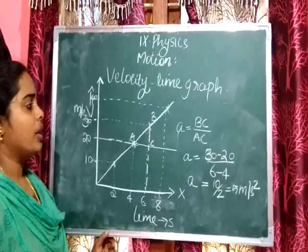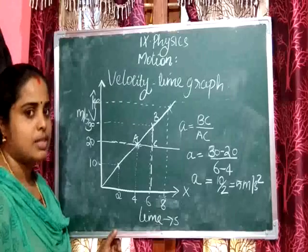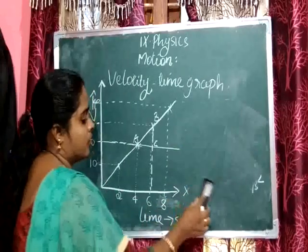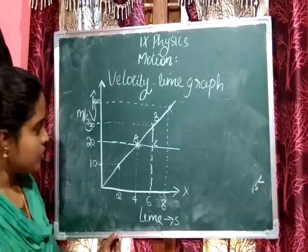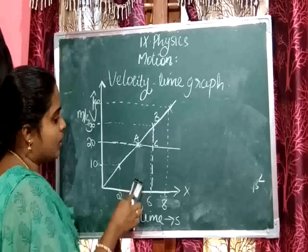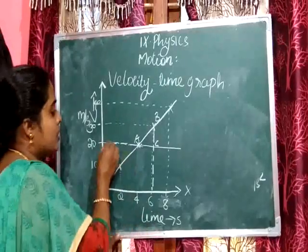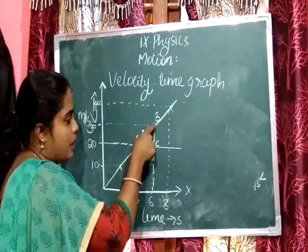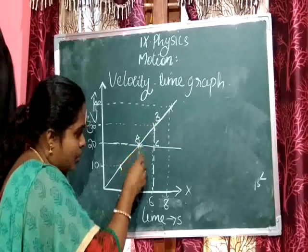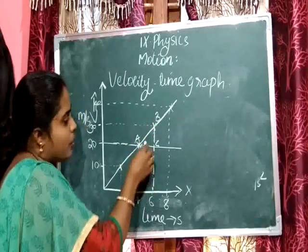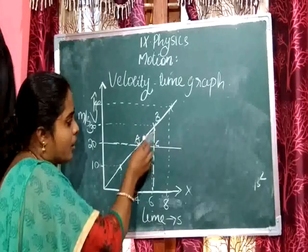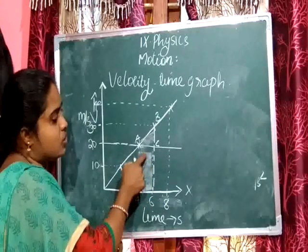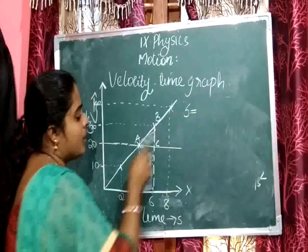Next, we can see how to find the distance travelled from this graph. The distance travelled can be given by the area under the graph. Considering the same two points A and B, the area under the graph between those points gives the distance travelled. So S equals area under the graph.